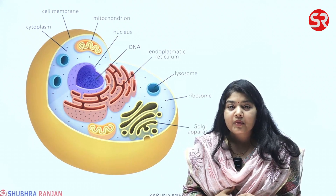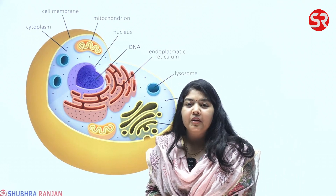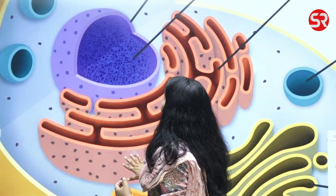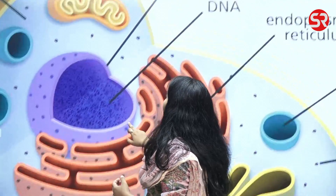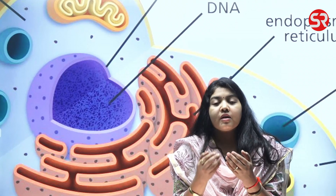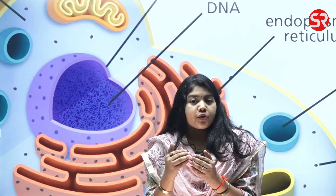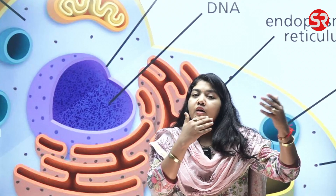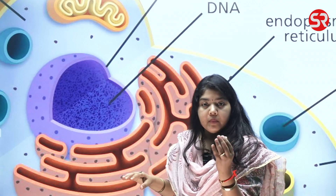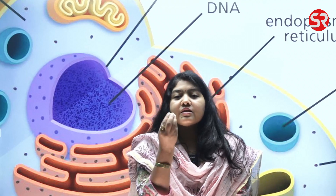The most important part of the cell is the nucleus. We will also study it in detail when we study genetics. Within the nucleus you will find chromatin material, and this chromatin material contains DNA. DNA is the component of the nucleus that stores and passes on genetic information from one organism to its offspring. This DNA is stored in chromatin material, and it contains genetic information in the form of genes — genes being the basic unit of inheritance.